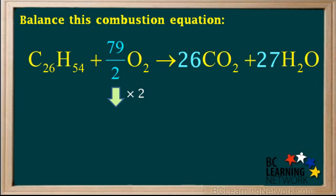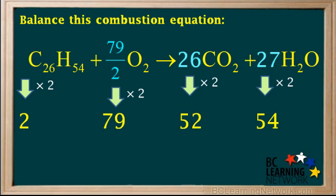But to keep the equation balanced, if we multiply 79 over 2 times 2, then we must multiply all the coefficients by 2. This gives us the set of coefficients 2, 79, 52, and 54.